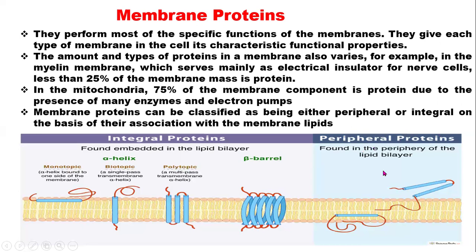Peripheral proteins are found in the periphery of the lipid bilayer — not deeply embedded. They are found at the water periphery. For example, they may be outside the membrane but with some residues of their chain going inside. They are within the periphery, not deeply embedded as integral proteins are.